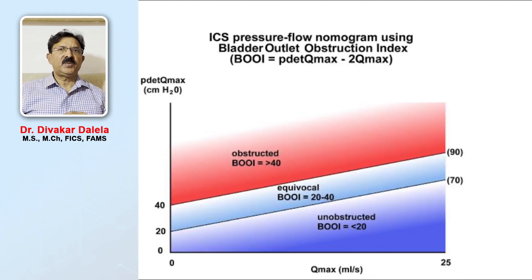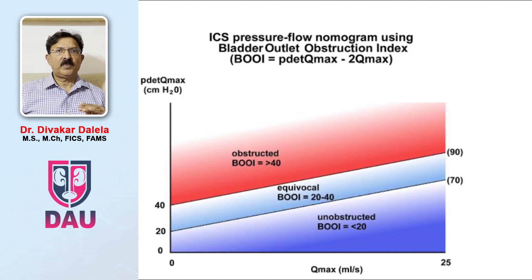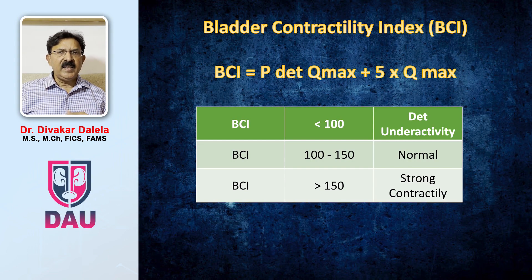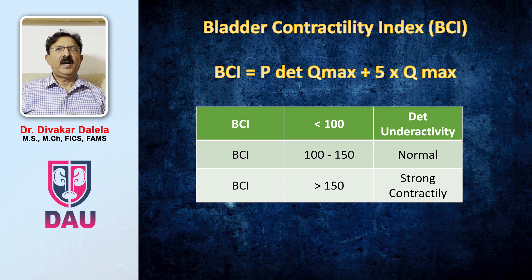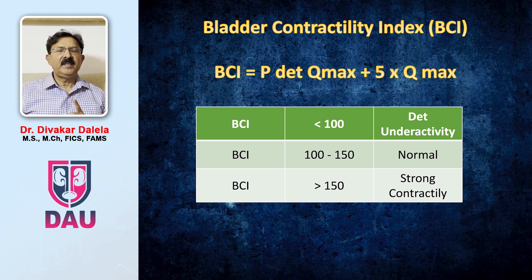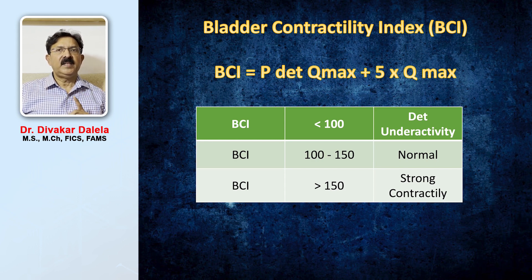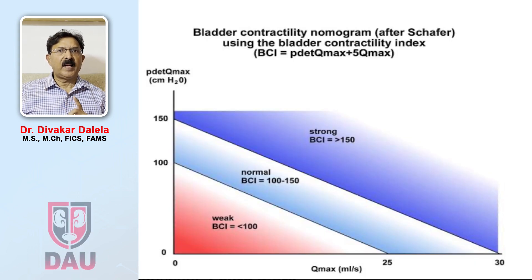The ICS has shown this in the form of a nomogram with three zones: unobstructed, equivocal, and obstructed. The other index commonly used is the Bladder Contractility Index, BCI, calculated by adding P-det max with five times Q-max. If the BCI is less than 100, it is regarded as underactive detrusor. If it is 100 to 150, it is regarded as normal. If it is more than 150, it is regarded as strong contractility. The ICS has also presented this as a nomogram showing three zones: weak, normal, and strong contractility.